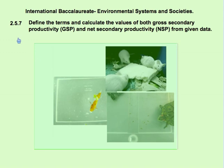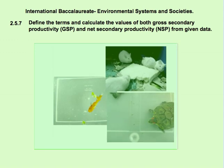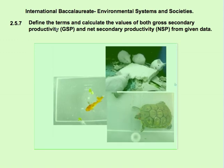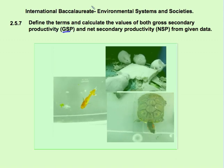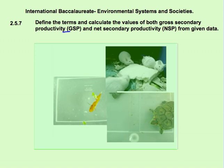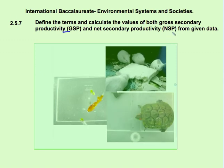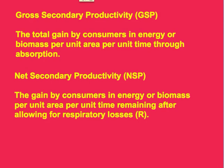Today we consider topic 2.5.7: define the terms and calculate the values for both gross secondary productivity (GSP) and net secondary productivity (NSP) from given data. Our first definition is the net secondary productivity — the gain by consumers in energy or in biomass per unit area per unit time after allowing for losses from respiration.